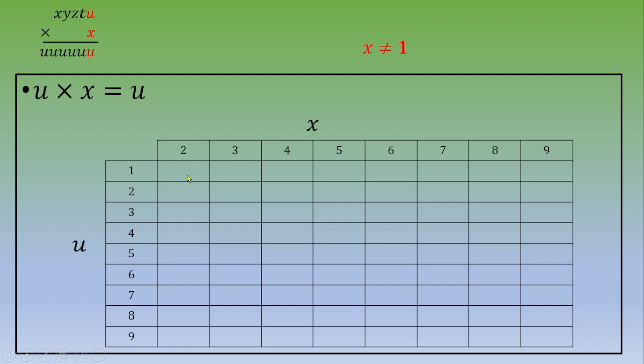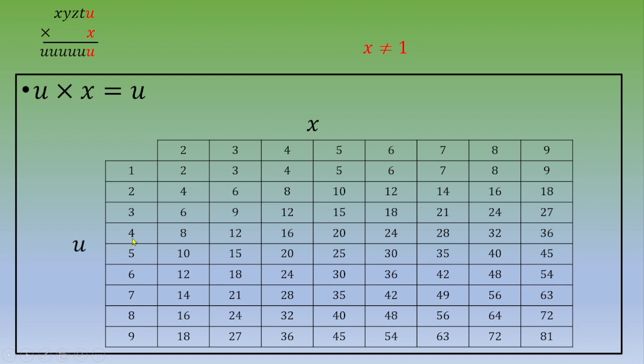And each cell is a product of u times x. For example, 4 times 2 is equal to 8. And now we are looking for the units. So every time the unit of u should be the same as the unit of the product.